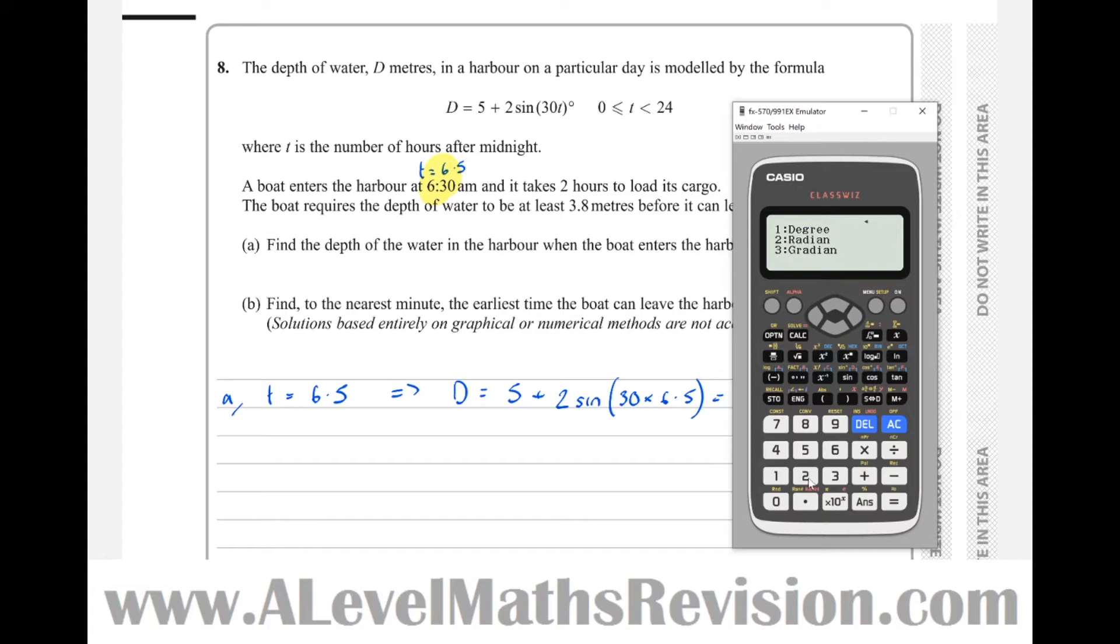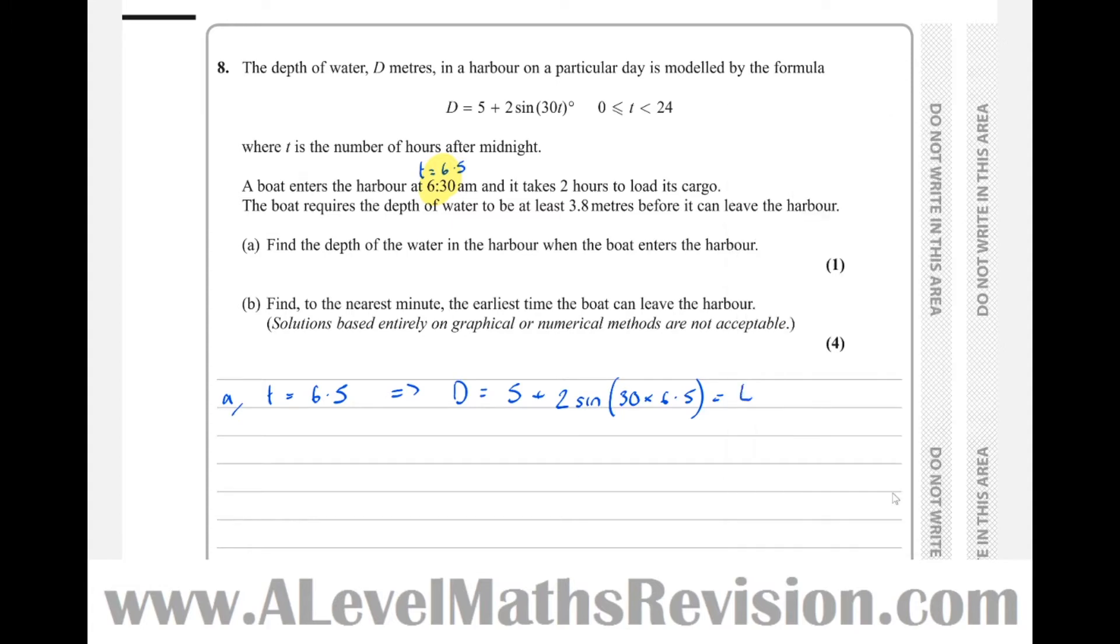So it's 5 plus 2 sine of 30 times 6.5, which equals 4.4824 meters. We'll want to round that a little bit, I would suggest three or four significant figures, so let's leave it as 4.482 meters.